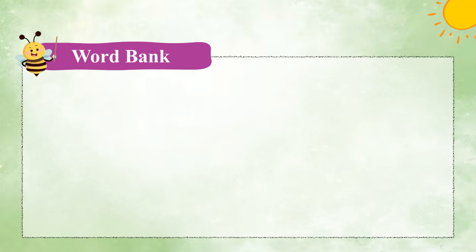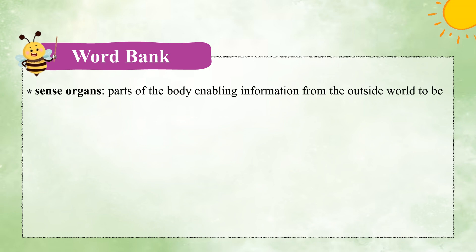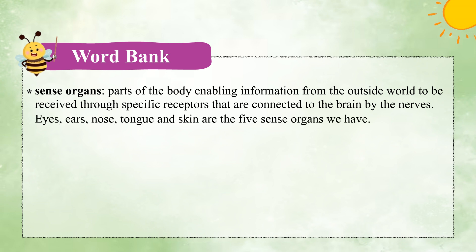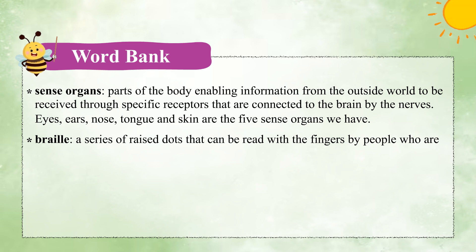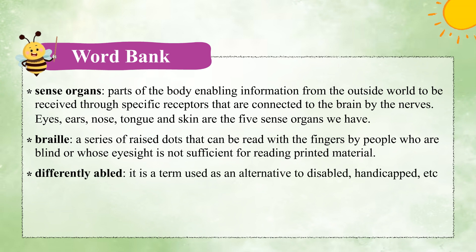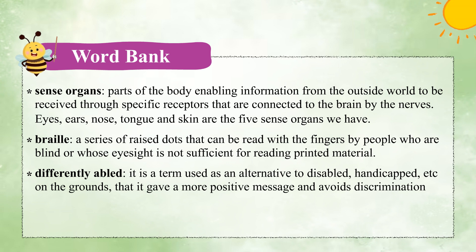Word Bank. Sense organs: parts of the body enabling information from the outside world to be received through specific receptors that are connected to the brain by the nerves. Eyes, ears, nose, tongue and skin are the five sense organs we have. Braille: a series of raised dots that can be read with the fingers by people who are blind or whose eyesight is not sufficient for reading printed material. Differently Abled: a term used as an alternative to disabled, handicapped, etc., on the grounds that it gives a more positive message and avoids discrimination towards people with disabilities.